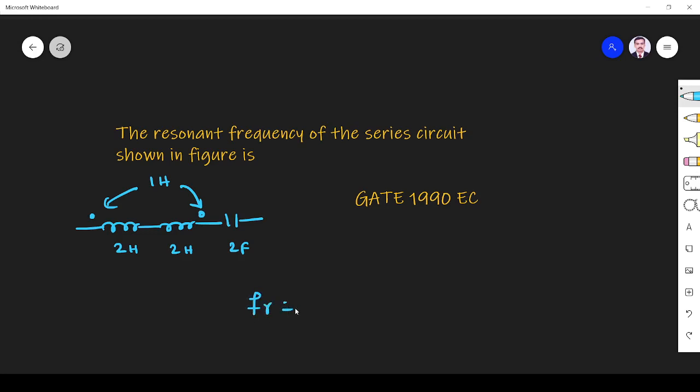We know resonant frequency of LC is 1 by 2π√LC. They have given C equals 2F. L we have to find.